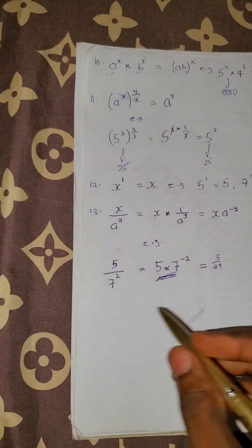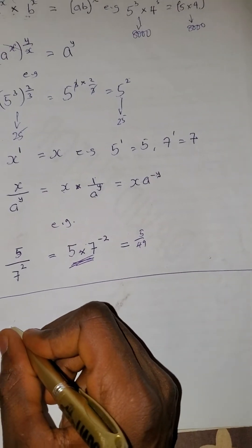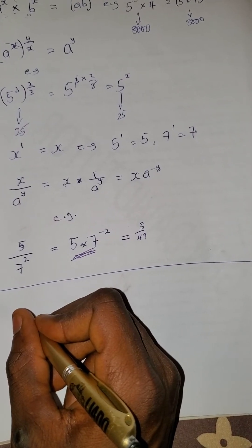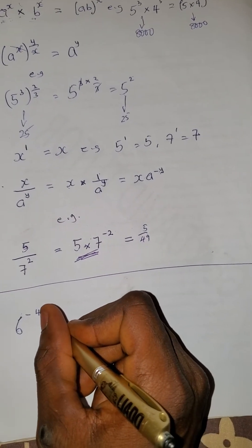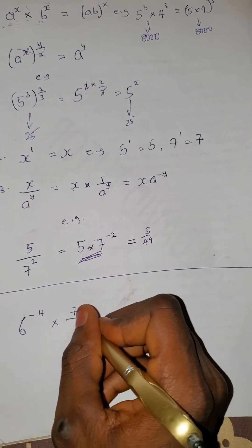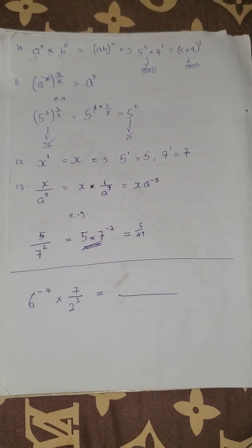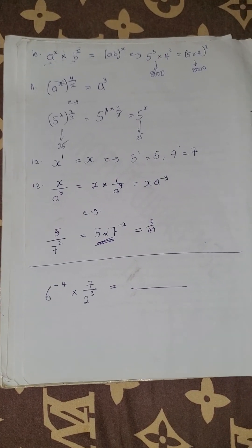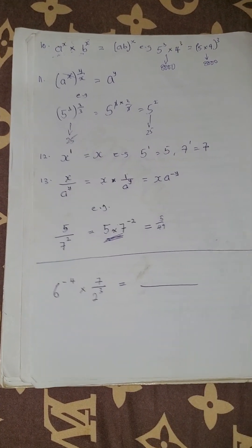Now at the comment section, let me have the answer to this practice problem: 6 raised to the power minus 4, multiplied by 6 raised to the power minus 4, multiplied by 7 over 2 raised to the power 3. Let me know the final answer in the comment section. Thank you very much — I remain Inshallah the blessing, popularly known as General David. Like, comment and subscribe. The next class will be looking at the laws of logarithms. God bless you.